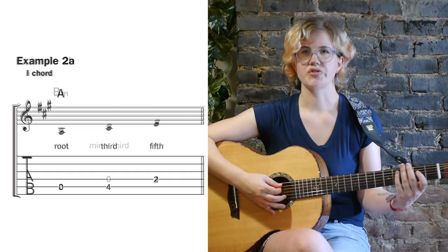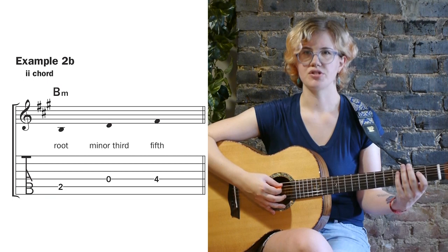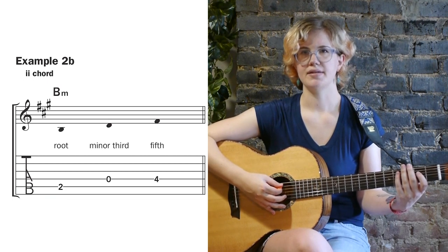Example 2B shows us the notes in B minor, the minor 2 in the key of A. The notes are B, D, and F sharp.